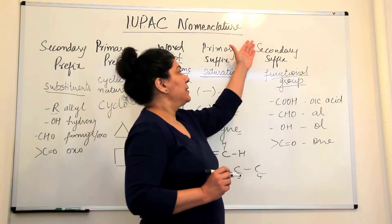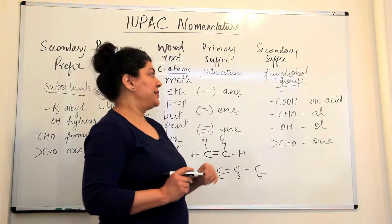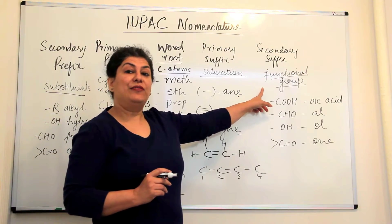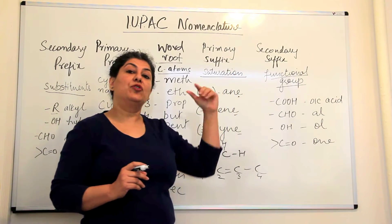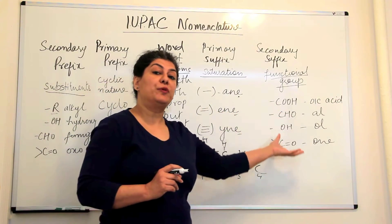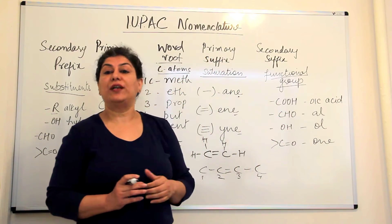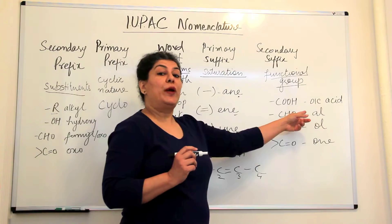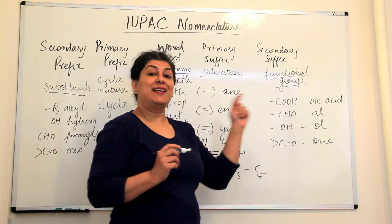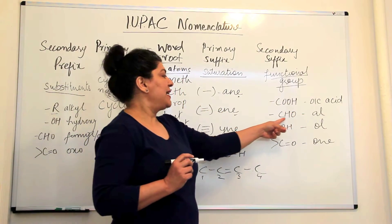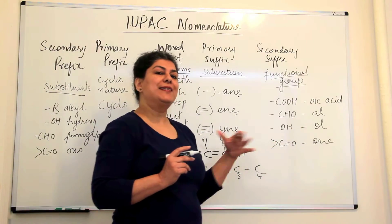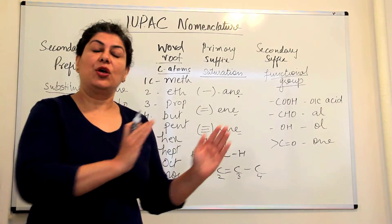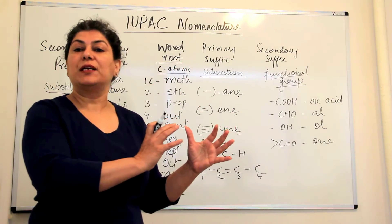The third part is the secondary suffix. The secondary suffix gives you an idea of the functional group. The functional group is a single atom or a group of atoms responsible for the chemical properties of that series of hydrocarbons. If an organic compound has -COOH in it, it is a carboxylic acid. If it has -CHO, it is an aldehyde. The functional group divides hydrocarbons into different classes with a certain set of chemical properties.